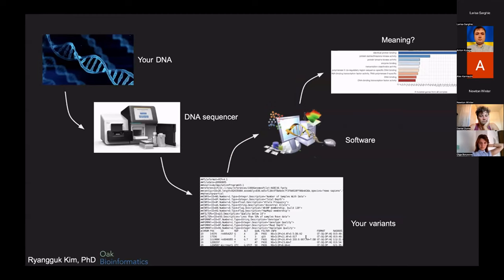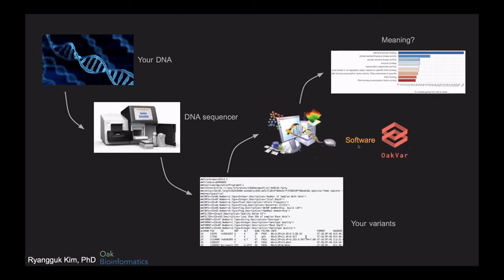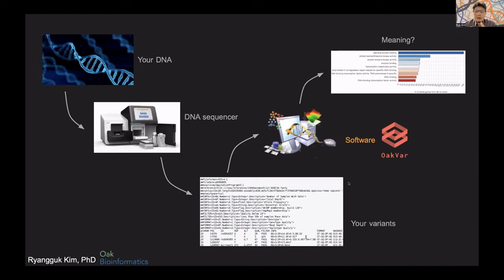You use a DNA sequencer, you sequence your DNA, and then you get a file of your variants. Then we will use some software to get to the meaning of our DNA sequences. Oak Far and Open CRAVAT are software programs that help interpret your variants and tell you what your DNA sequences mean.